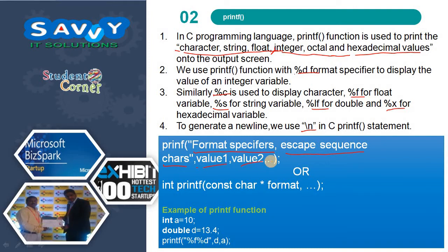Another syntax is: int printf(const char*, ...). For example, I am taking int a equal to 10 and w equal to 13.4, and I am using format specifiers %f and %d with w and a.